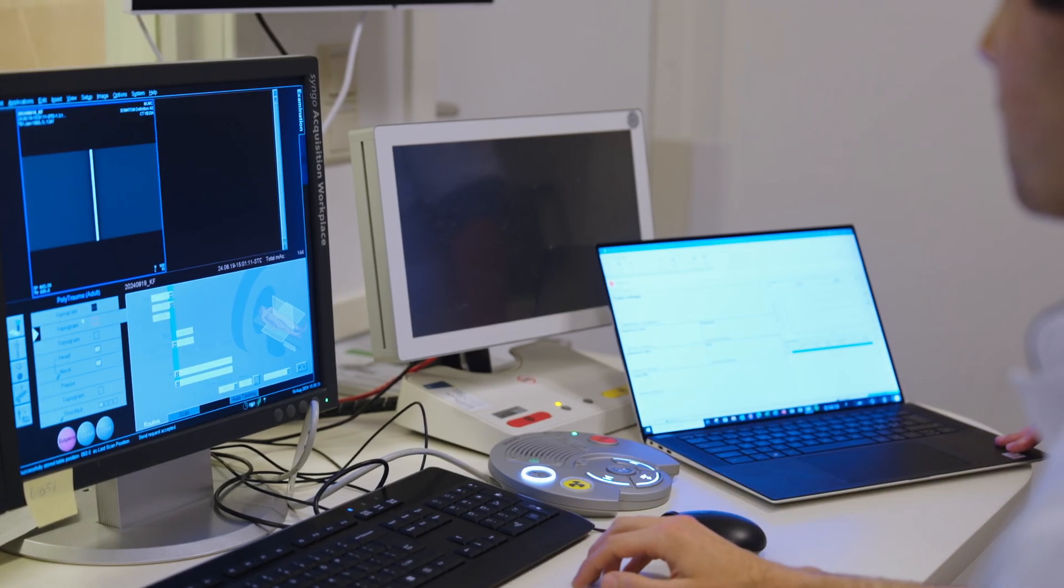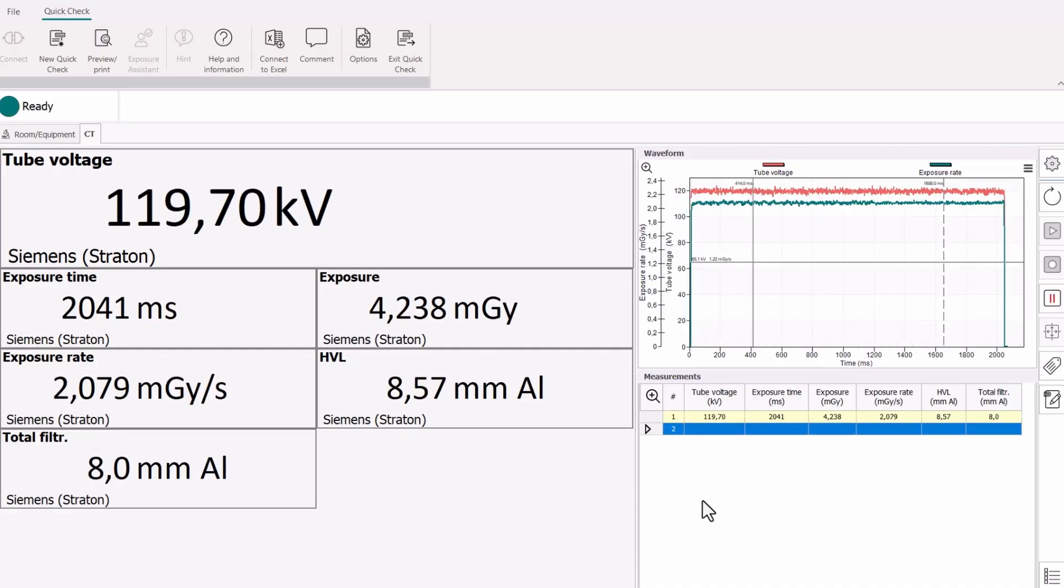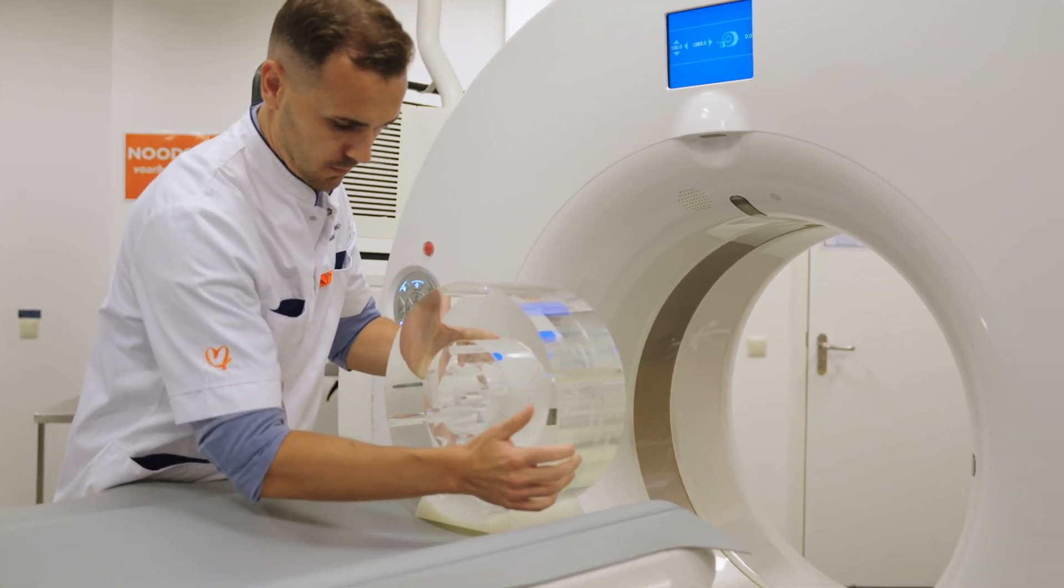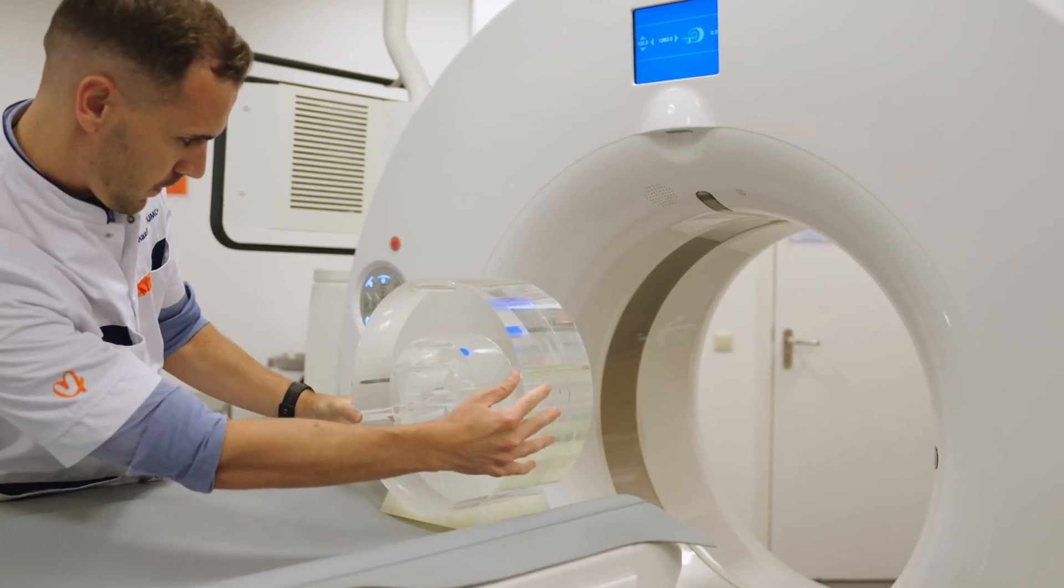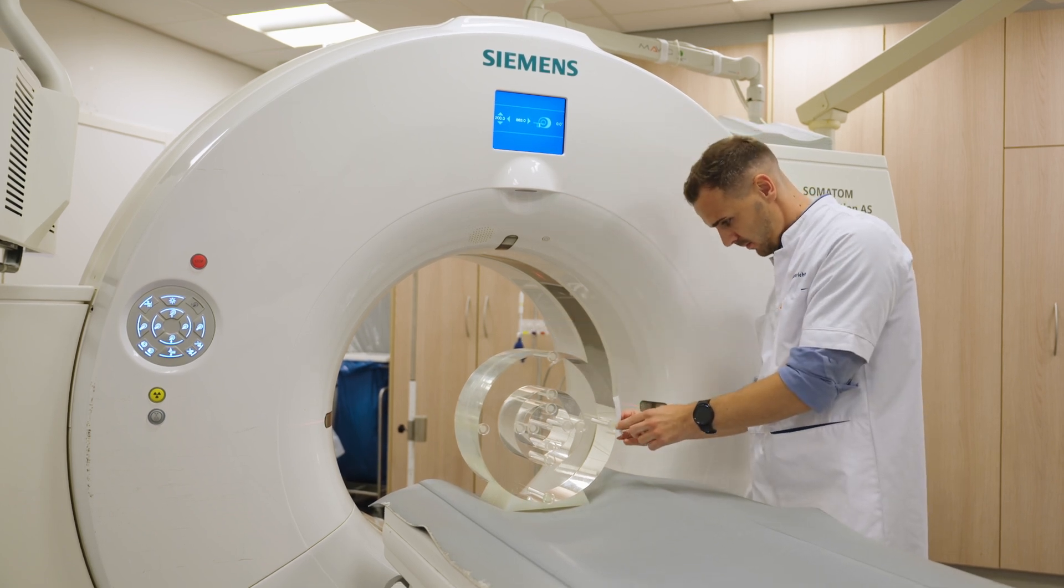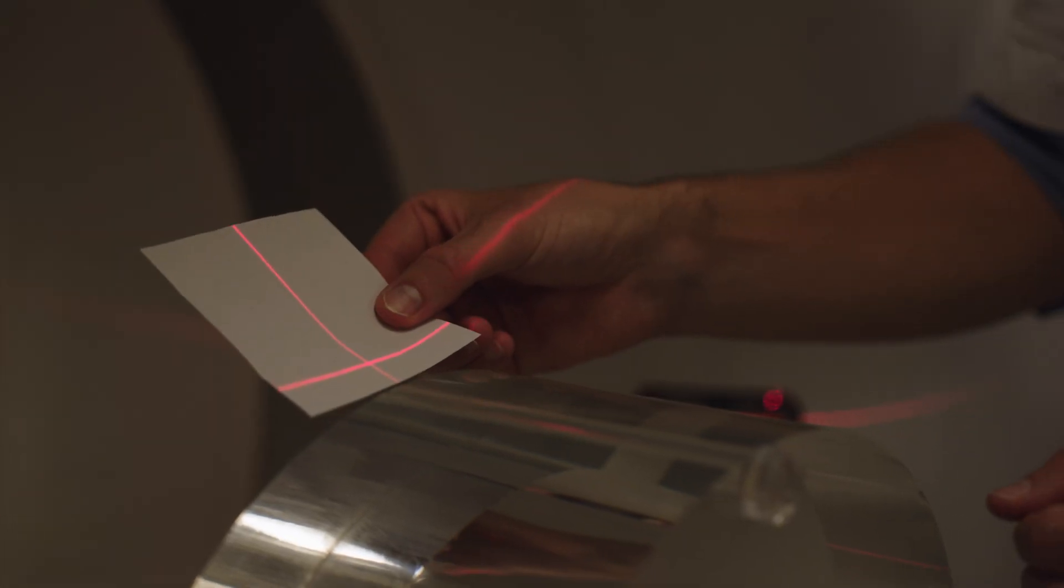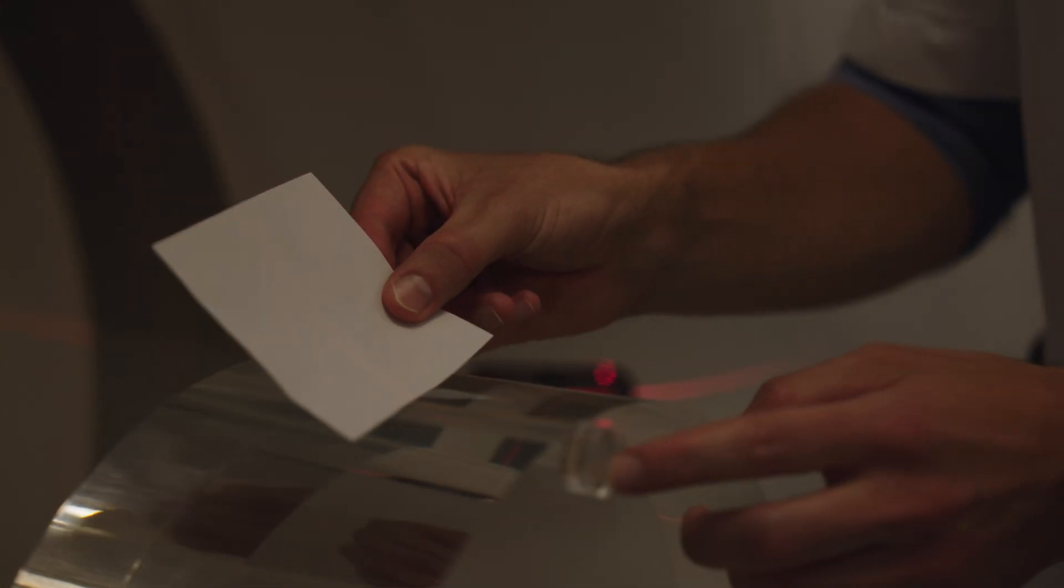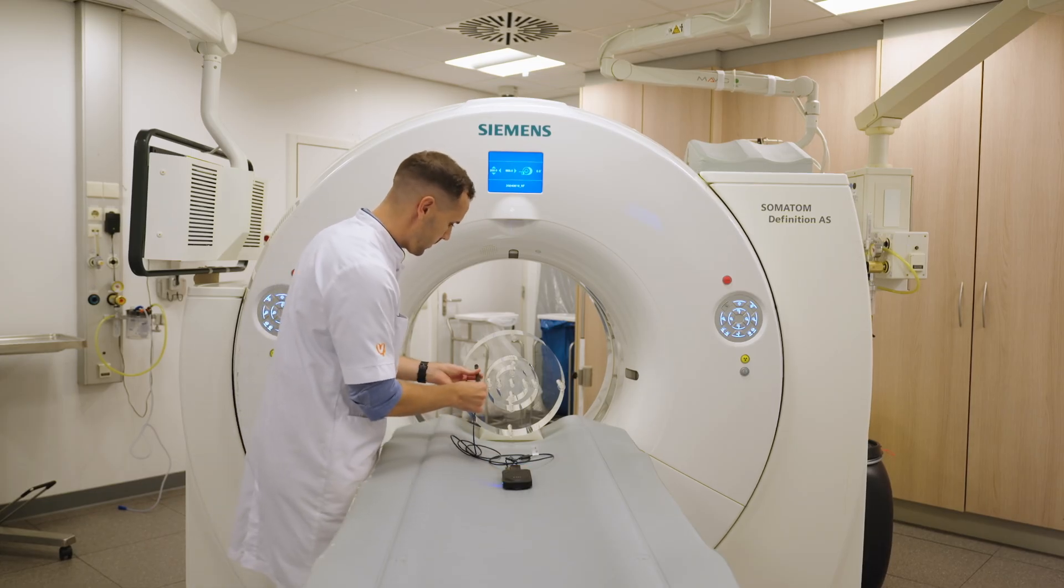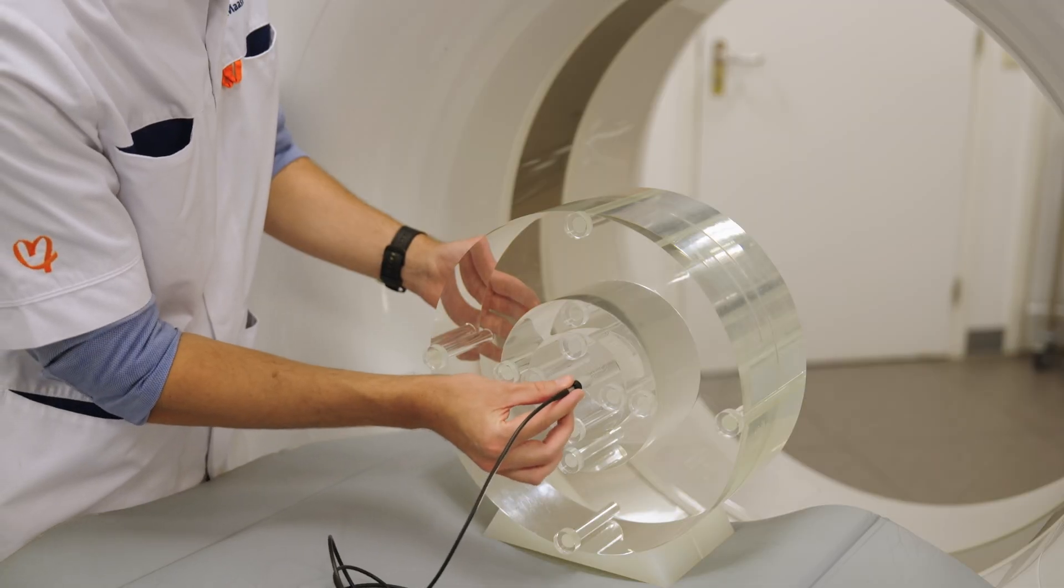To measure the CT dose index, place the CTDI phantom into position. Position the phantom so that the central hole is in the isocenter of the CT system and align the peripheral holes with the vertical and horizontal axes. Place the RTI ion chamber in the central hole of the phantom. Ensure to plug the other holes with the PMMA rods provided.